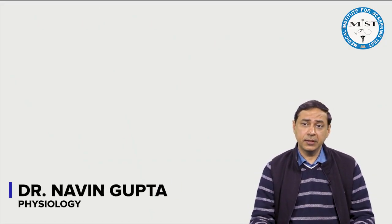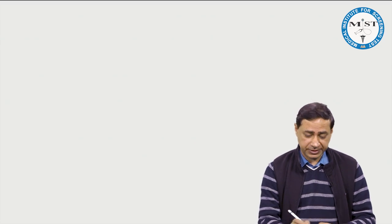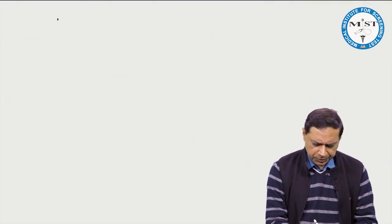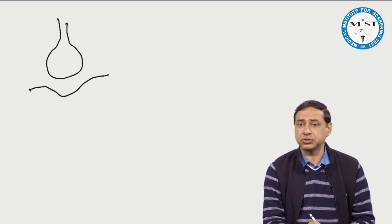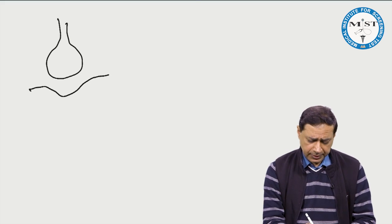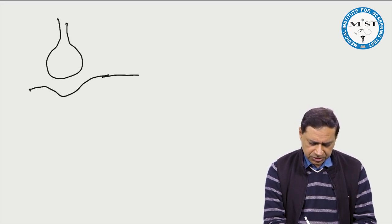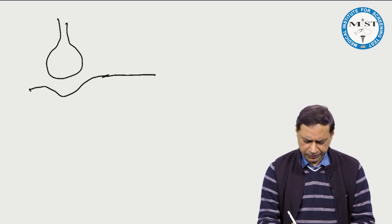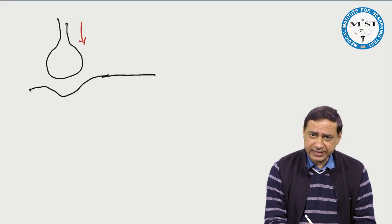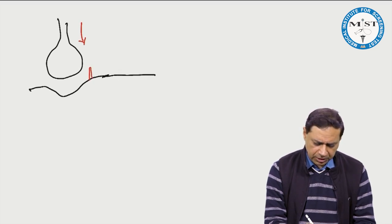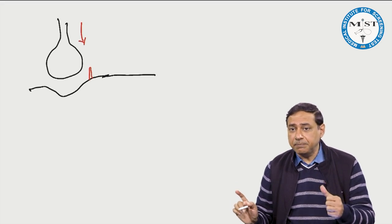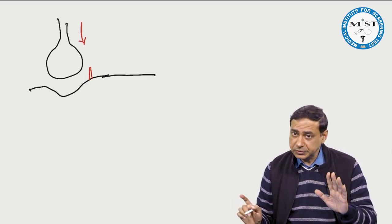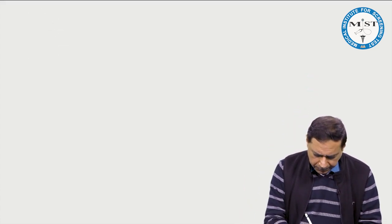Good morning friends, let us discuss excitation-contraction coupling. This is the nerve ending and this is the skeletal muscle — the neuromuscular junction. The skeletal muscle membrane receives an action potential, which is transmitted to the muscle, and the muscle contracts.